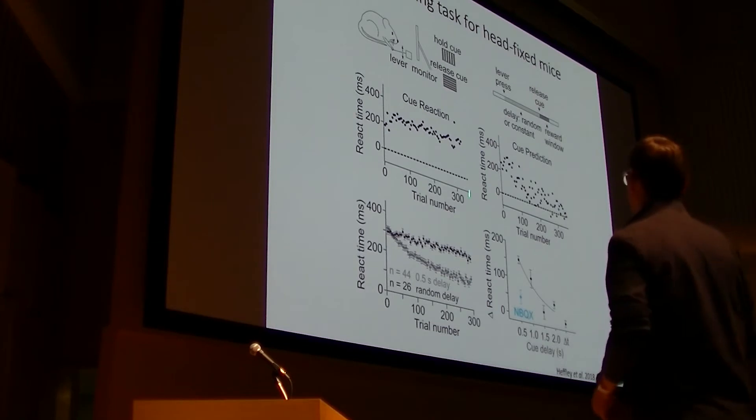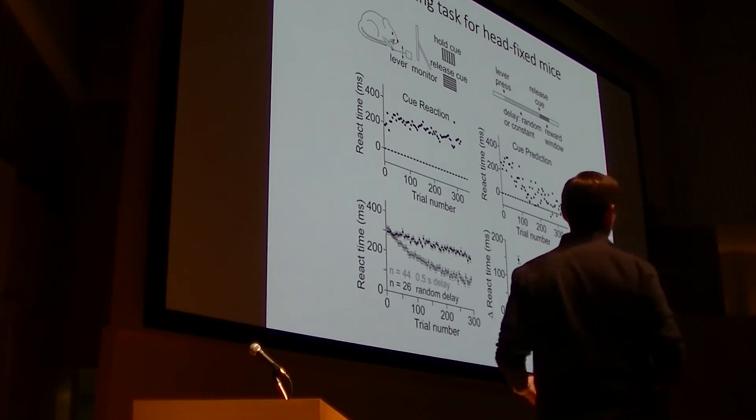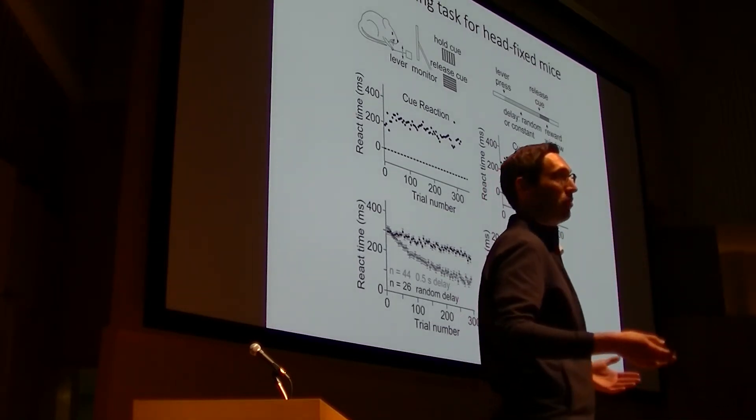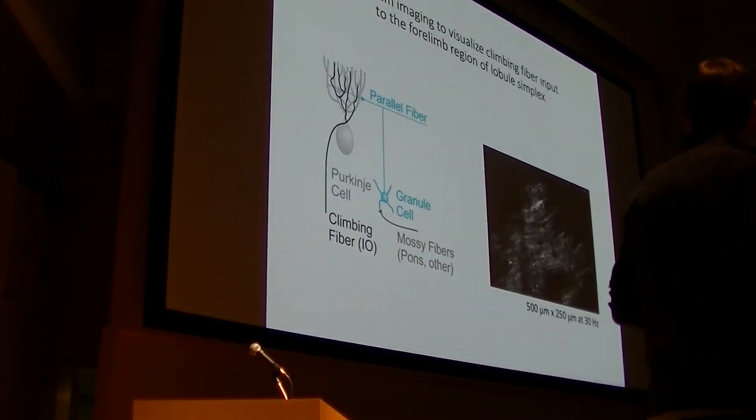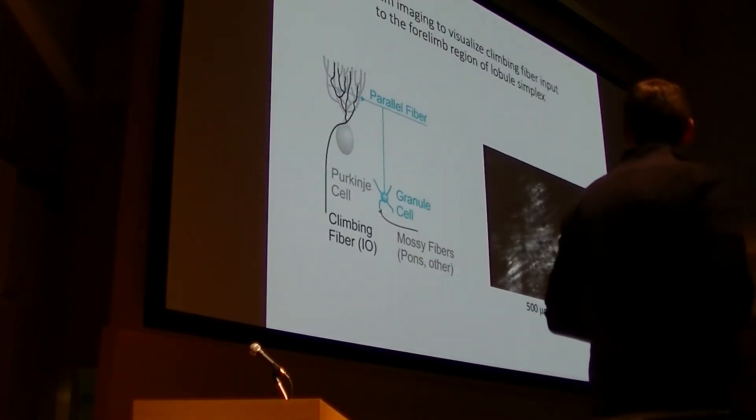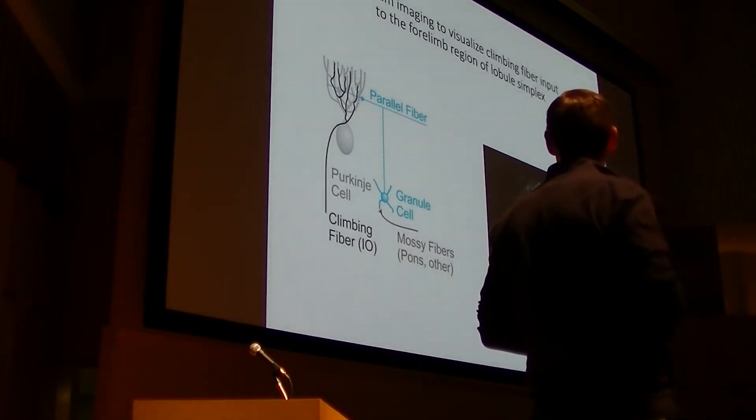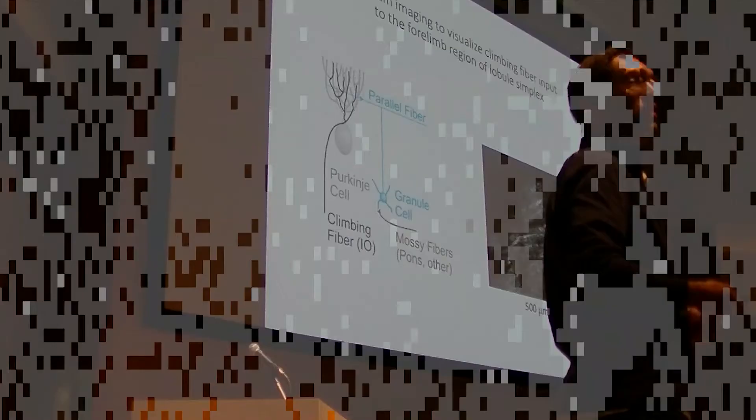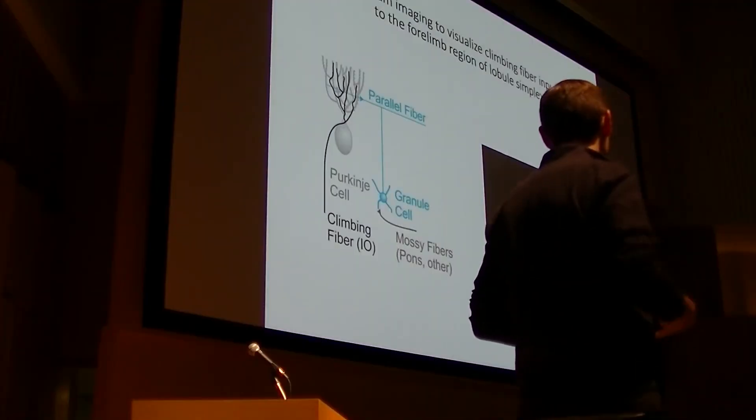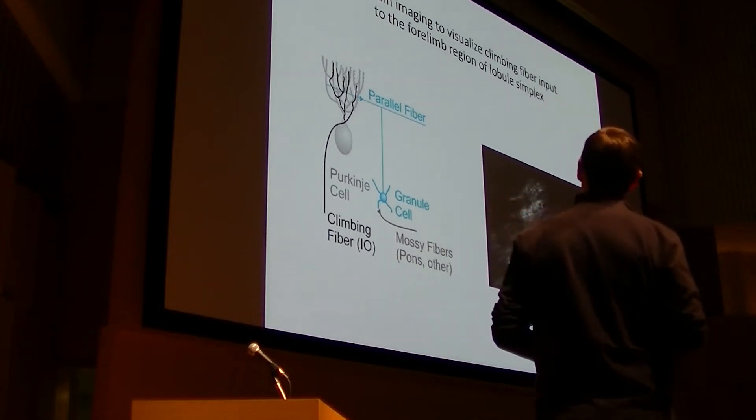Today, I'm going to show you data from this version of the task with the goal of telling you what the climbing fibers are doing or what signals are available to drive learning. We're going to use deep two-photon calcium imaging to visualize the inputs from climbing fibers to the dendrites of Purkinje cells. As I mentioned, they produce a large regenerative calcium spike in these dendrites, and that's ideal for two-photon calcium imaging.